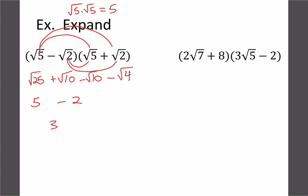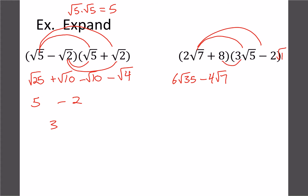We'll come back to these later when we do harder dividing questions, as this is a useful strategy. For the next example: 2 root 7 times 3 root 5 gives 6 root 35; 2 root 7 times negative 2 gives minus 4 root 7 — a whole number can be thought of as root 1, so root 7 times 1 stays root 7; and the last term gives 24 root 5, and 8 times negative 2 gives regular 16. There are no like terms so we can't simplify further — that's the final answer.